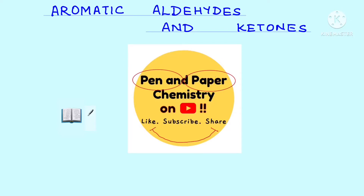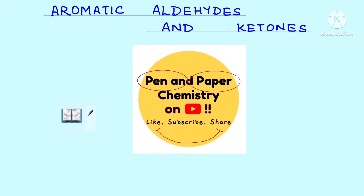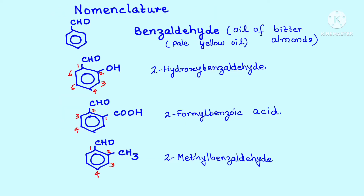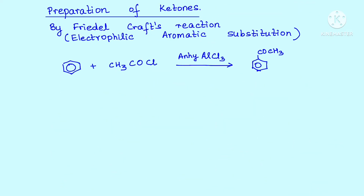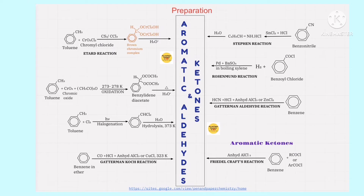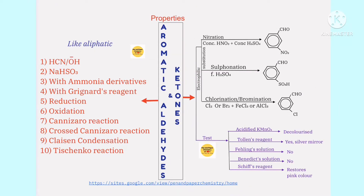Hello dear students, back to pen and paper chemistry — have your notebook and pen to take down notes for offline reference. We continue with the topic of aromatic aldehydes and ketones. Nomenclature done, preparation of aromatic aldehydes and ketones done — flowchart already shared. We are now going on to the properties of aromatic aldehydes and ketones, and as you can see, it's a very simple chart.